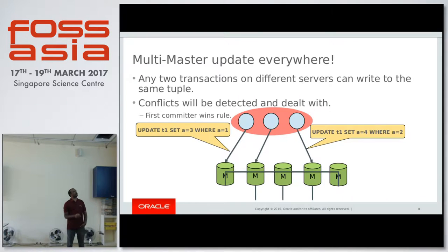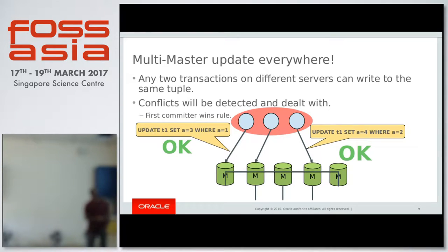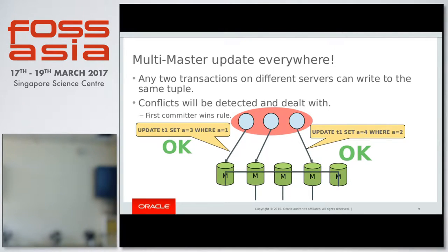So how it works: let's say one client is doing an update where A equals one, and another client is doing an update where A equals two. As you can see, these are not conflicting. So both of them will go ahead and commit. Whoever commits first will broadcast that particular transaction to all the rest of the servers in the group, in a pre-commit phase. The same thing will happen to the second transaction as well. Since they are not conflicting, both of them will be committed on all the servers in the group.